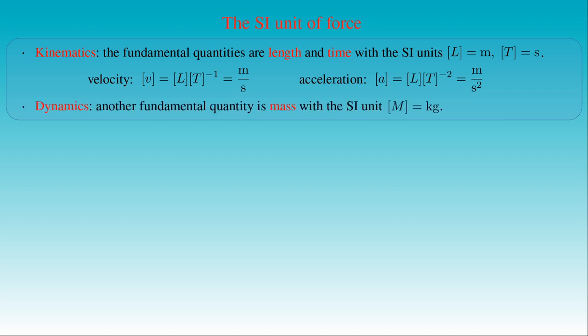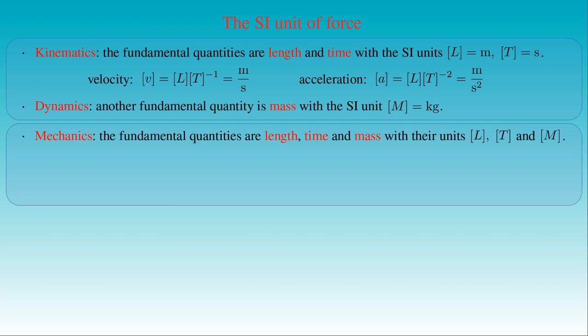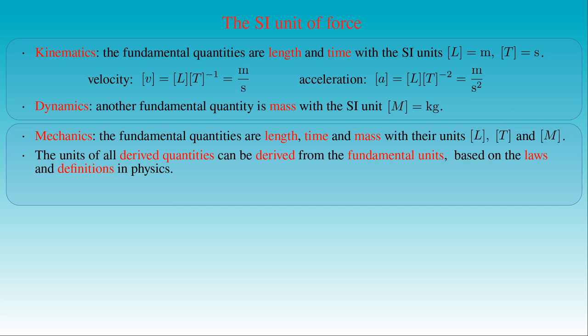In dynamics, mass is introduced as another fundamental quantity with SI unit kilogram. In mechanics, these three fundamental quantities — length, time, and mass — are sufficient to derive all other physical quantities. As an initiative by Gauss and Weber, the system of physical units was introduced in 1836, where length, time, and mass, together with their units, were considered the fundamental quantities. The unit of any derived physical quantity Q has the form L^α × M^β × T^γ, where α, β, and γ are integer numbers in mechanics. In SI units this is written as meter^α × kilogram^β × second^γ.